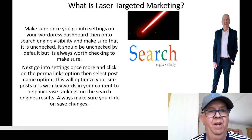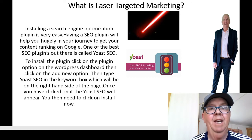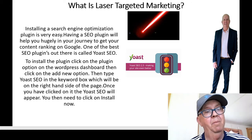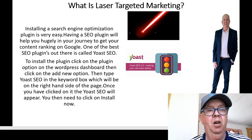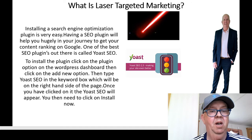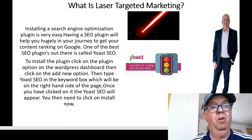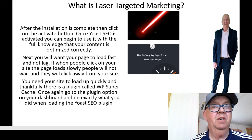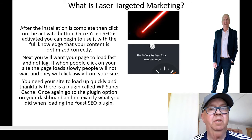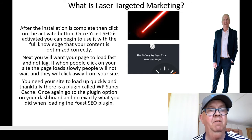Installing an SEO plugin is very easy. Having an SEO plugin will help you hugely in your journey to get your content ranking on Google. One of the best SEO plugins out there is Yoast SEO. To install it, click on the Plugins option on your WordPress dashboard, then click Add New, and type Yoast SEO in the keyword search box on the right-hand side. Click on it, then click Install Now. After installation is complete, click the Activate button. Once Yoast SEO is activated, you can begin using it with confidence that your content is optimized correctly.